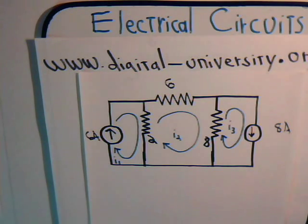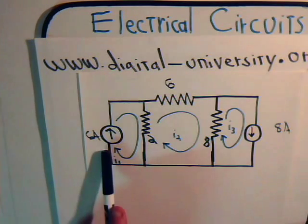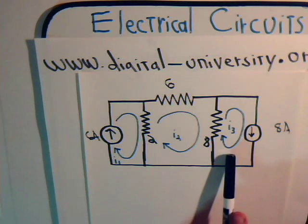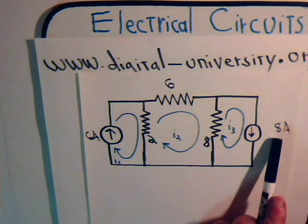And also now for this problem, here mesh current I1 that's 6 amps and here for mesh current I3 that's 8 amps.